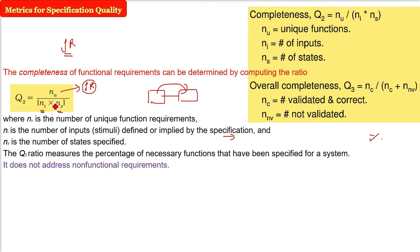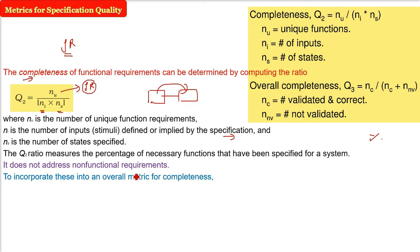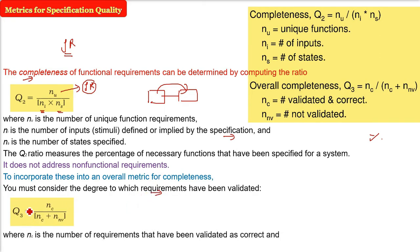But the one point about this metric is it does not address the non-functional requirement. In order to incorporate it into overall metric for completeness functional and non-functional, then we need to validate the degree to which the requirements have been validated. For that, another matrix is there Q3. nc by nc plus nv. Now, nc is the number of requirements that have been validated and we are saying that these are correct. That is why we have nc. They are validated and they are correct. This is nc. What about nv? These are the number of requirements that have not yet been validated. So, this is the Q3 which is taking the overall completeness metric.